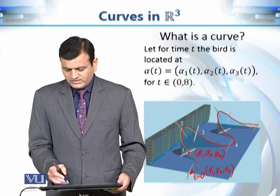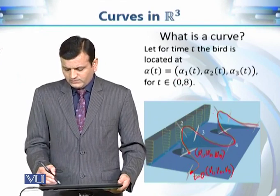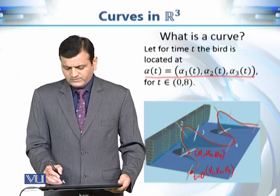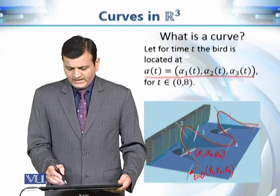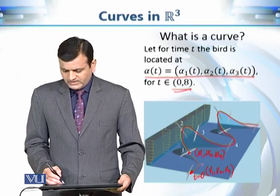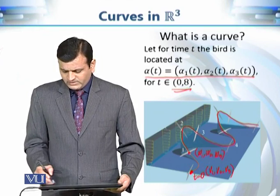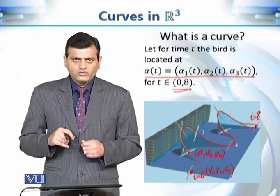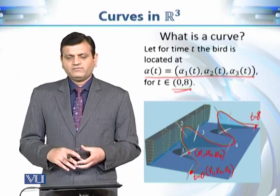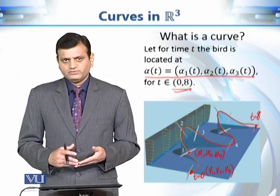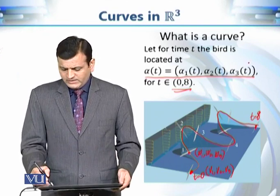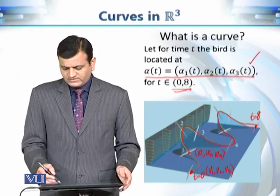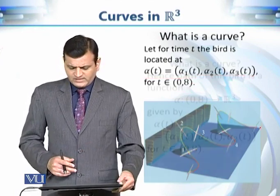If we want to write this down precisely, we can say that the trajectory or path of the bird can be given as a function alpha of t, with alpha₁(t), alpha₂(t), alpha₃(t) as its coordinates, where the time t varies from 0 to some value, say 8 minutes. Over these 8 minutes we record the coordinates of each and every point, constructing these functions alpha₁(t), alpha₂(t), alpha₃(t). These three coordinate functions of time t give us the exact trajectory of the bird.